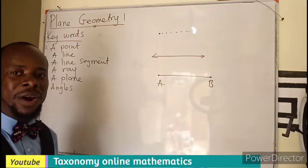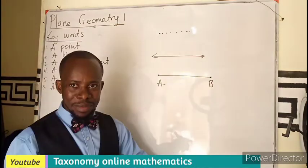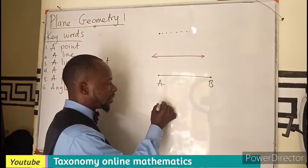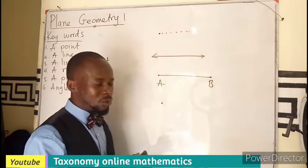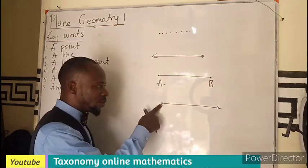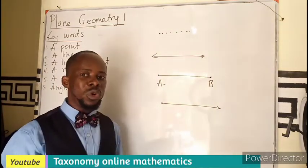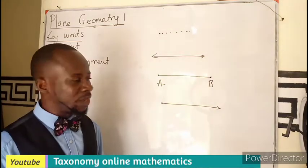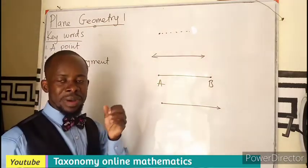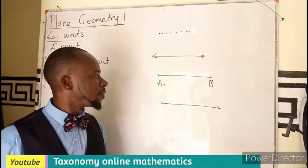Then we have a ray. A ray is also a line segment which has a starting point but no end. So it goes in this direction — it has a starting point, but it goes in an infinite direction. So it is going just like our line, but a line goes in two directions with infinite ends.